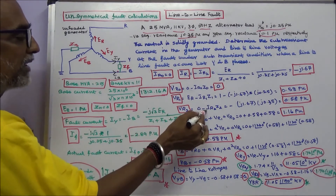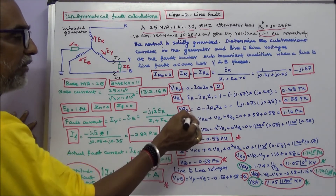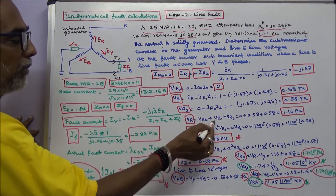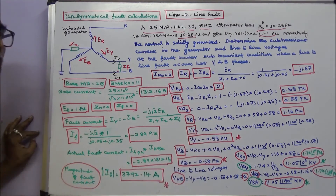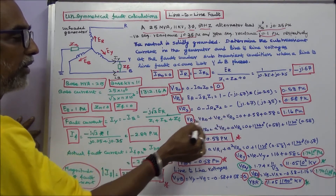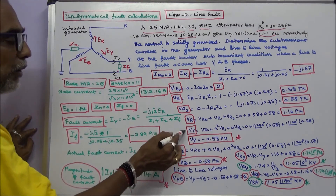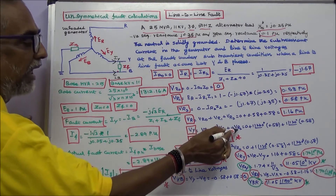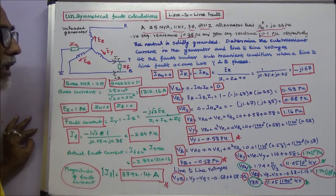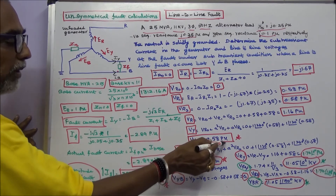VR is equal to VR0 plus VR1 plus VR2. VR0 is equal to 0. Substituting VR1 and VR2, VR is equal to 1.16 per unit. VR0 is equal to 0. VY is equal to VR0 plus a-squared VR1 plus a VR2. Substituting VR0 as 0 and all values in this equation, VY is equal to minus 0.58 per unit.